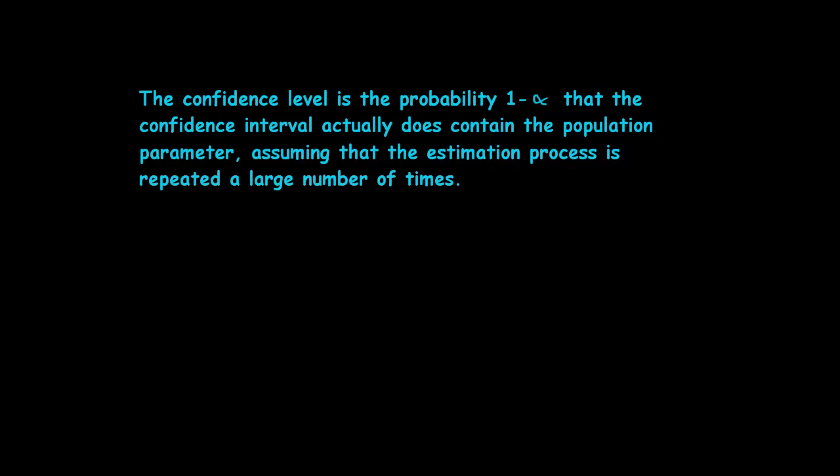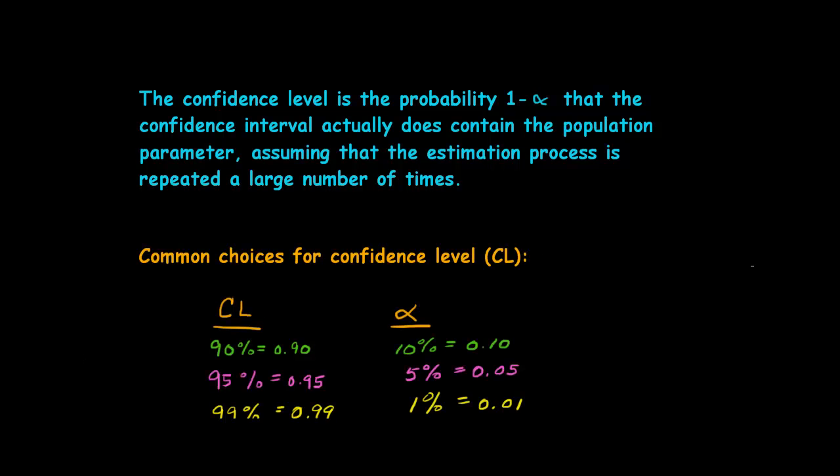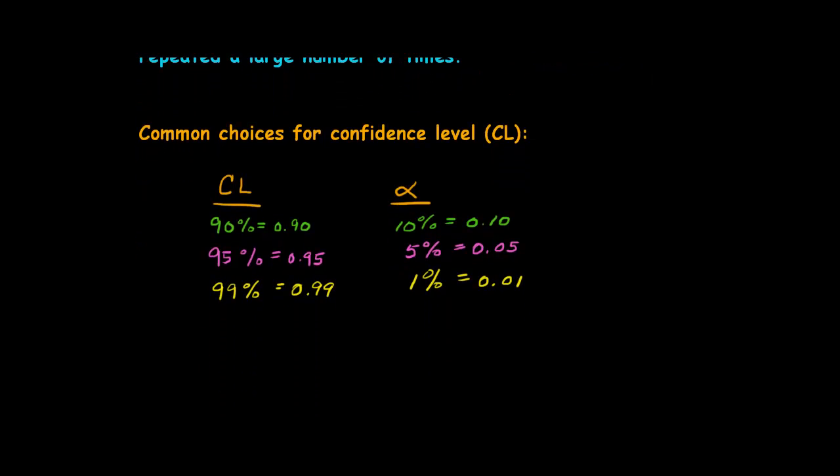Common choices of confidence levels are these three: 90%, which means our alpha is 10% or 0.10; 95%, with the associated alpha of 0.05; and 99%, with the associated alpha of 0.01. As we've said before, the 95% is the most common.